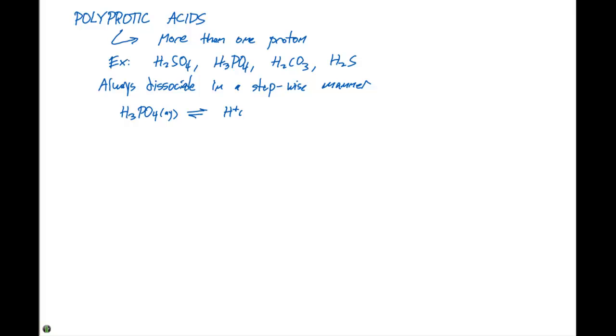H3PO4 is gonna be in equilibrium with H plus plus H2PO4 minus in solution. The Ka for this, which we'll call Ka1, is going to be 7.5 times 10 to the minus 3.